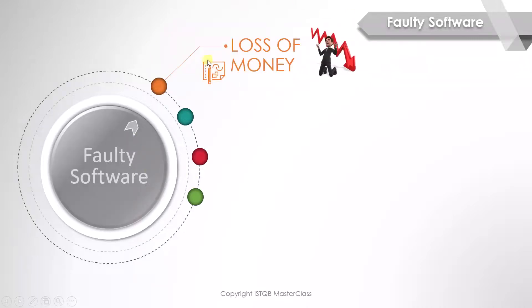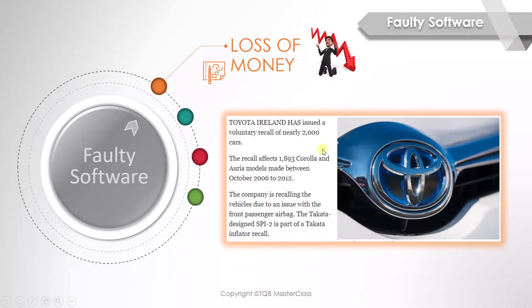The first consequence is a loss of money. To take a real life example, there was an article in the newspaper about a company recalling its car due to faulty airbags. Once this kind of news hits the market, the share value of such a company will plummet, causing even more loss of money.